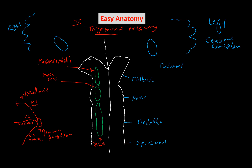Let's focus on pain and temperature. Pain and temperature are carried by all three divisions as first-order neurons to the spinal trigeminal nucleus. All three divisions carry pain and temperature from the facial area and go to the spinal trigeminal nucleus. The second-order neuron will then cross the midline to the opposite side and ascend via the trigeminal nucleus until it reaches the thalamus.